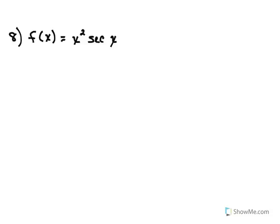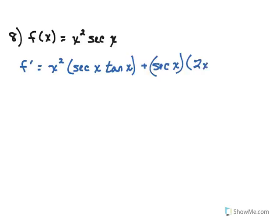Here we have another product rule. So we'll keep x squared, derivative of secant is secant of x tangent of x. Now we'll keep secant this time, multiply by the derivative of x squared, which is 2x.